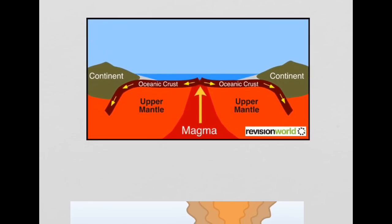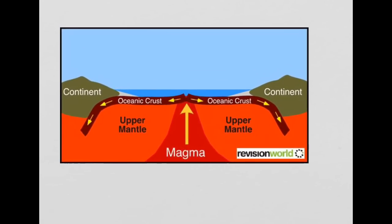This diagram shows a constructive plate boundary. We essentially have two convection currents operating as represented by the black arrows that I am just drawing.